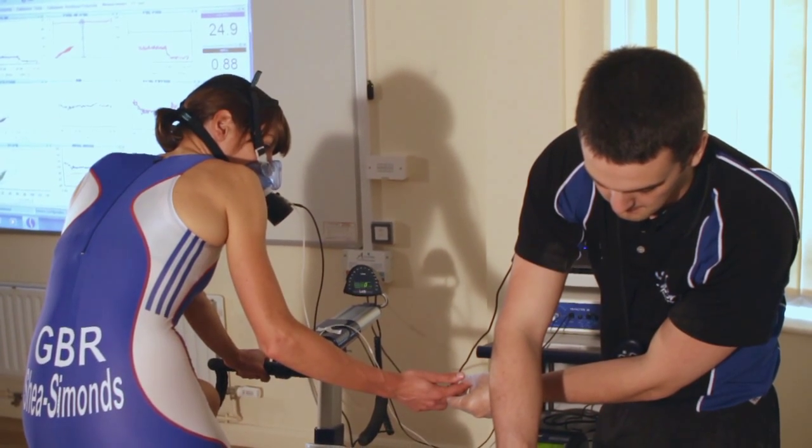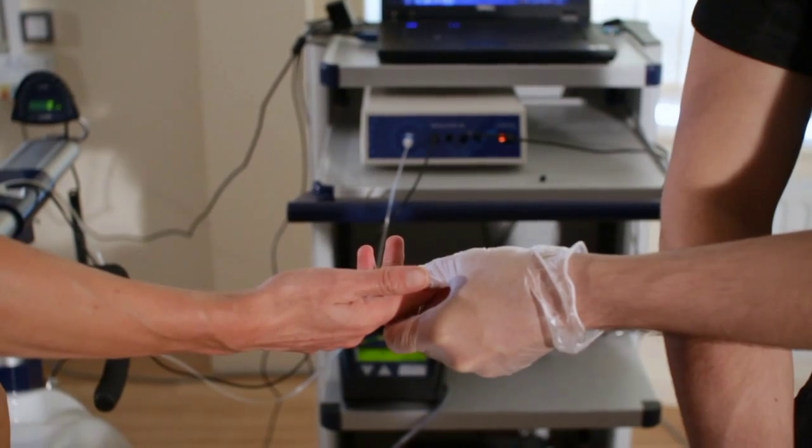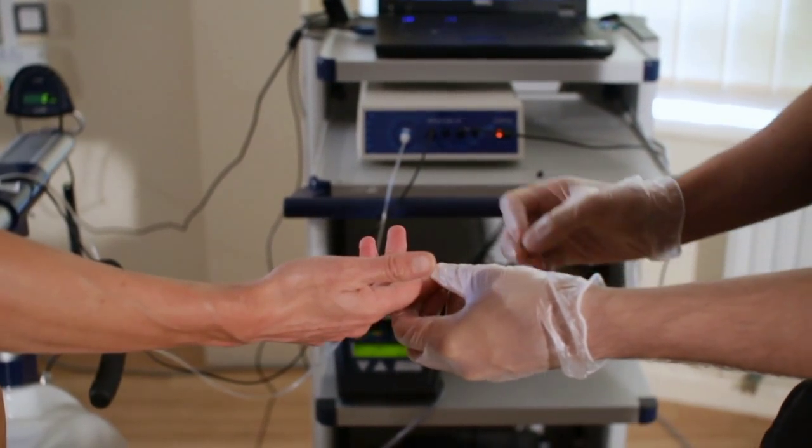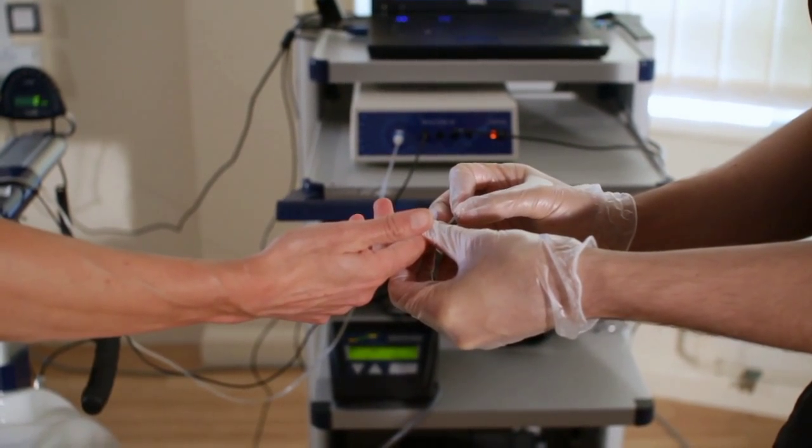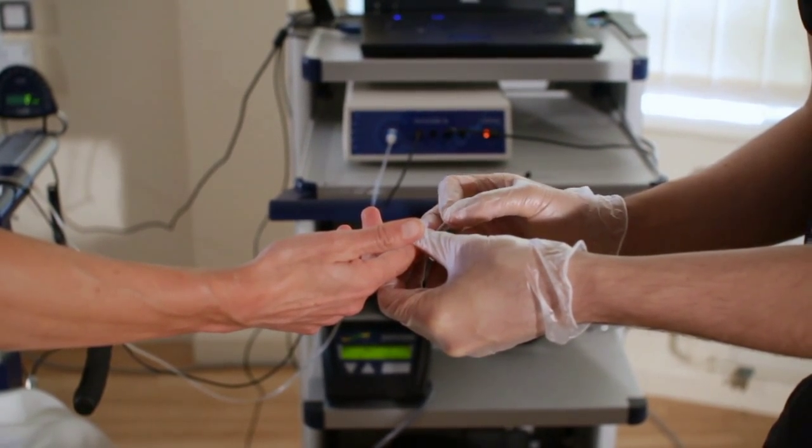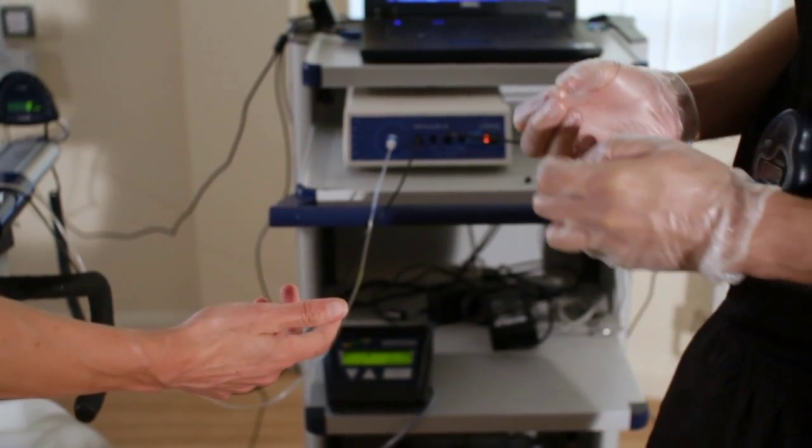A small blood sample should be taken during a short pause at the end of each stage. Oxygen uptake and heart rate values should also be collected and averaged over the final minute of each stage. Following each blood sample, the intensity is increased and the process begins again.